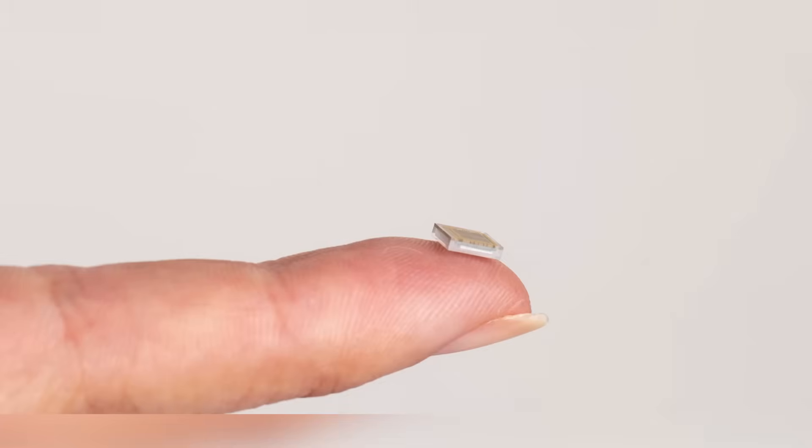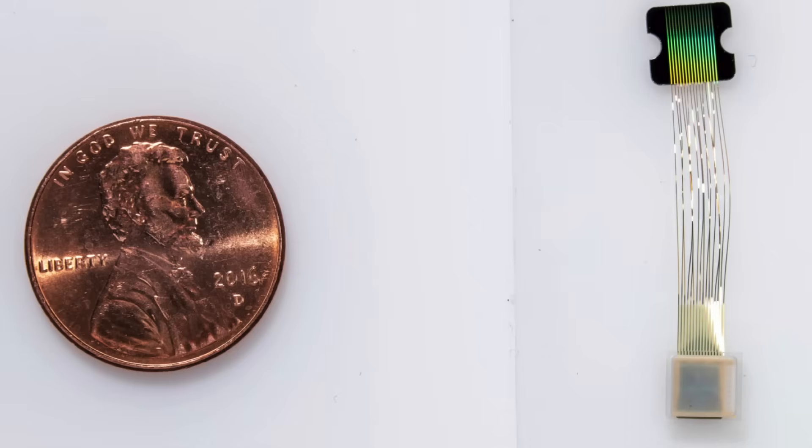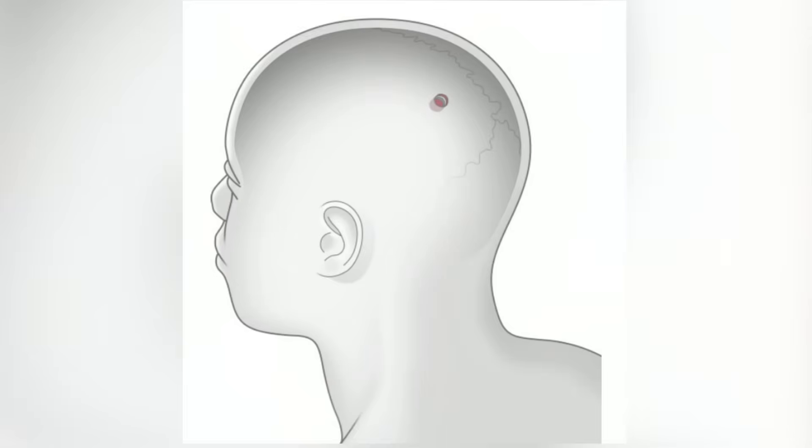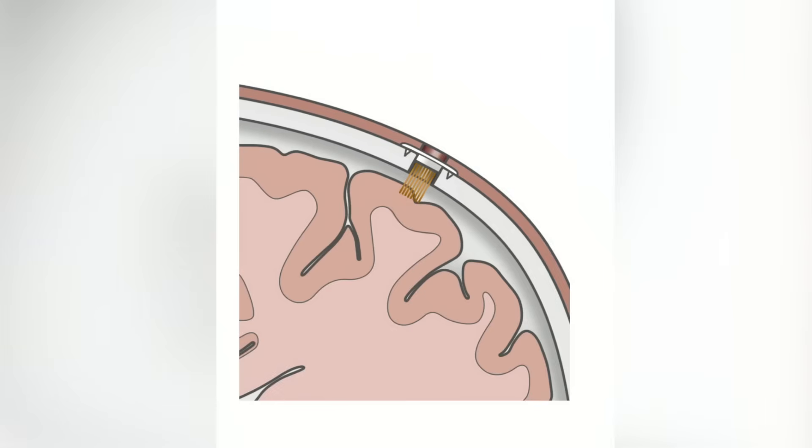Neuralink connects human brains to computers through a chip smaller than a penny. You insert it by drilling a small hole in the skull, although this could be as simple as a LASIK procedure in the future.